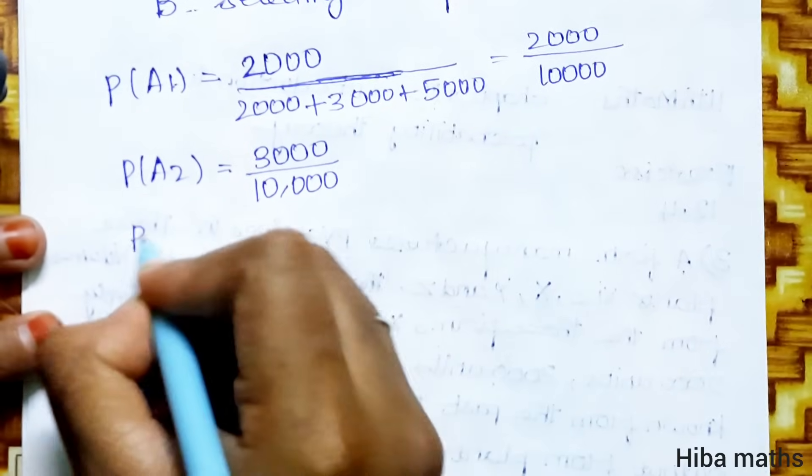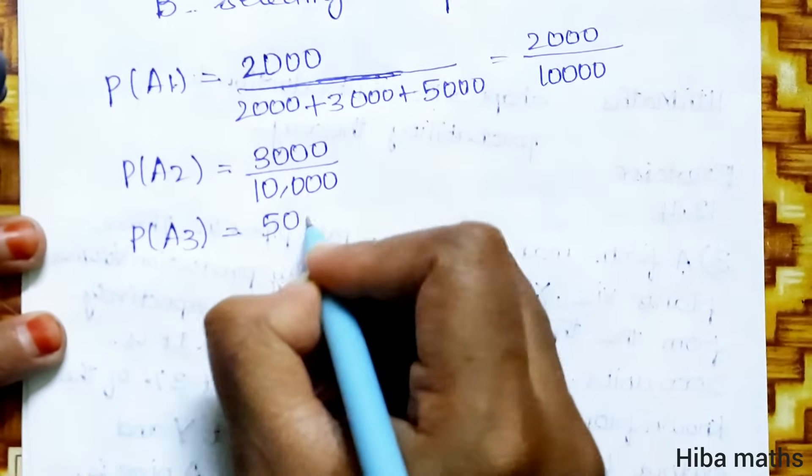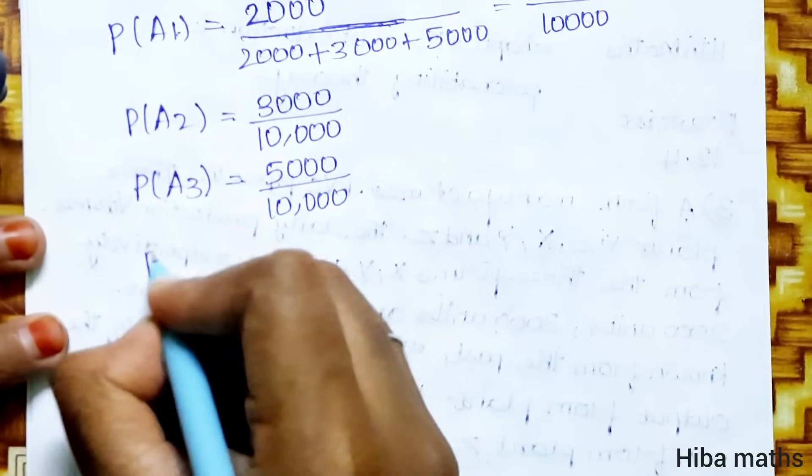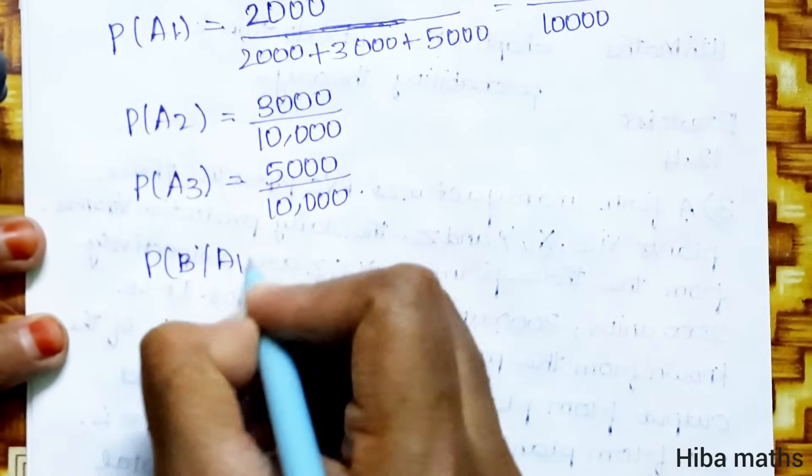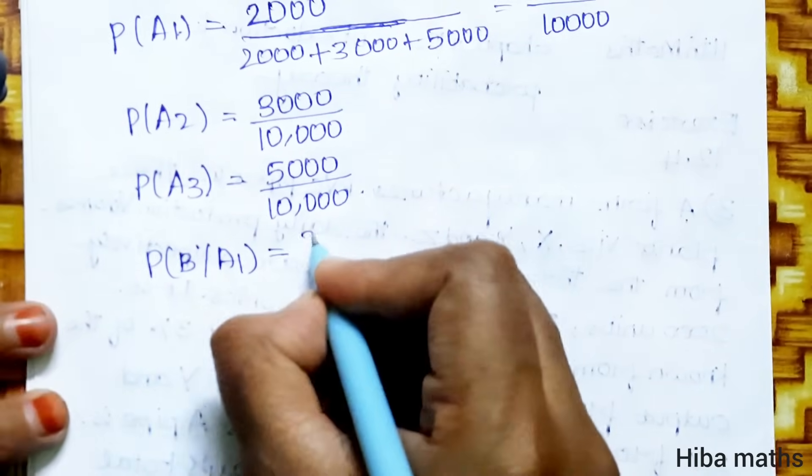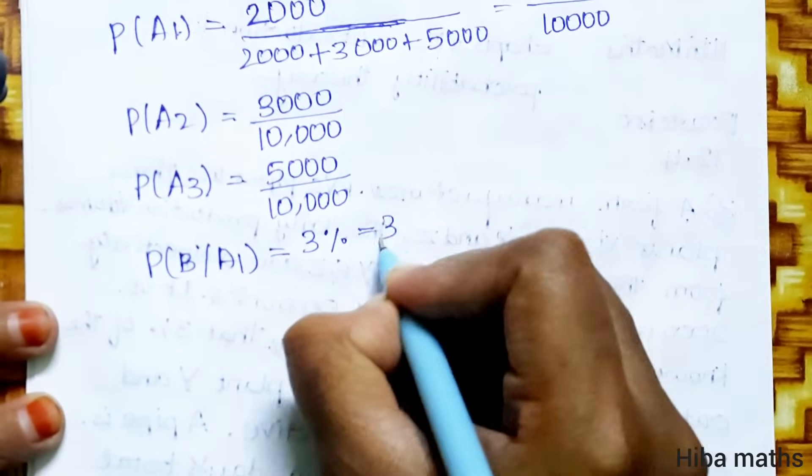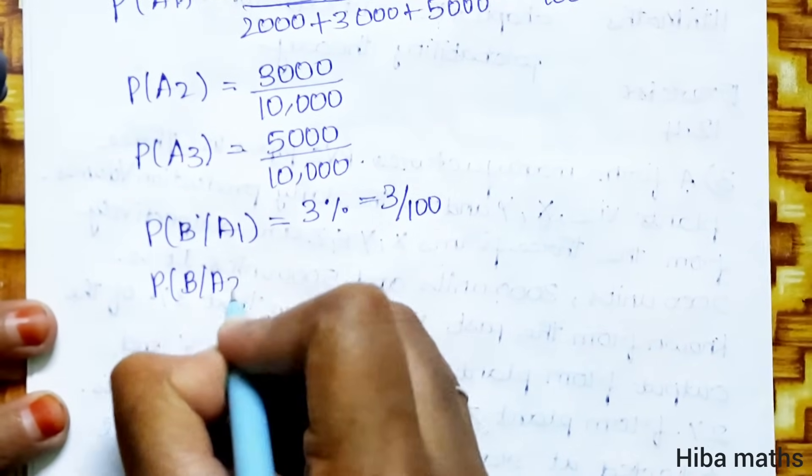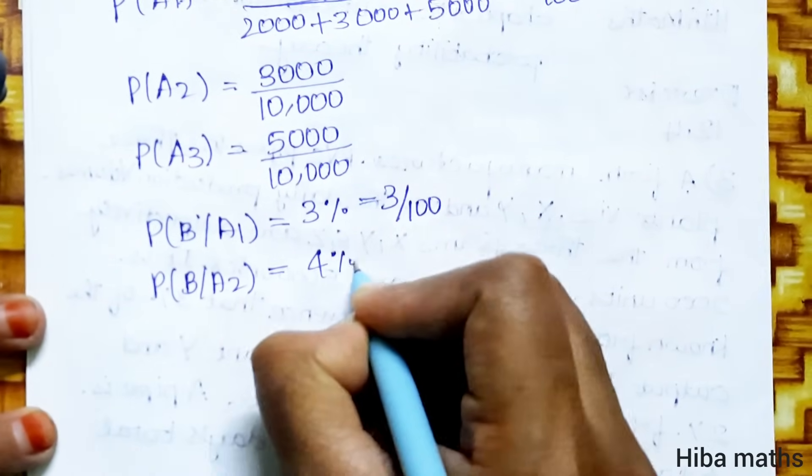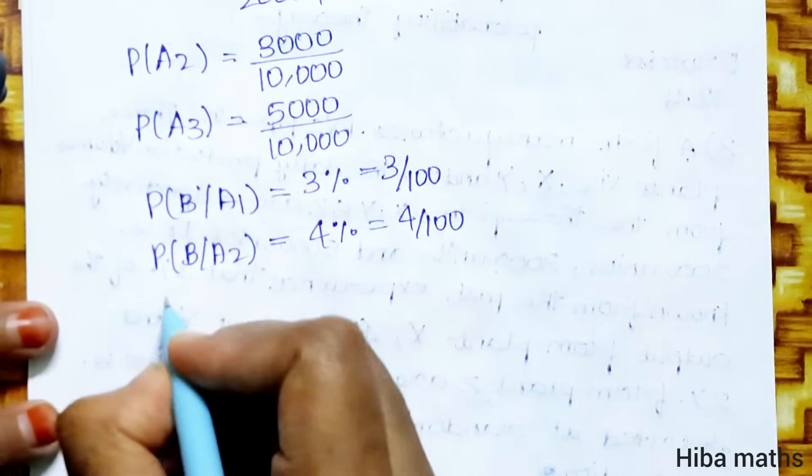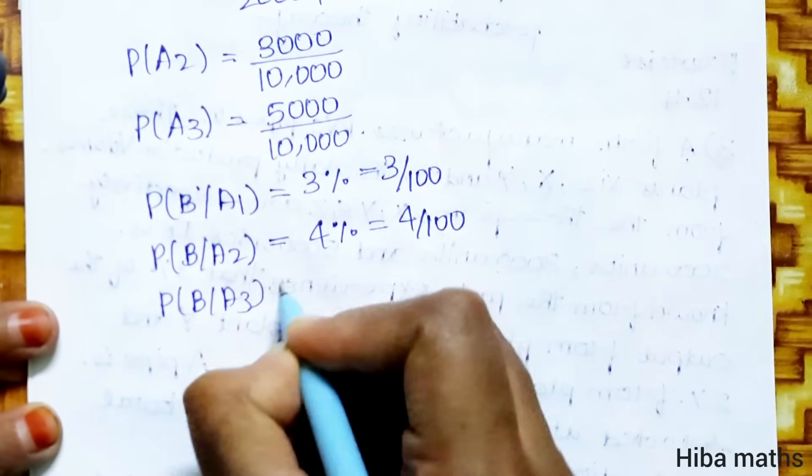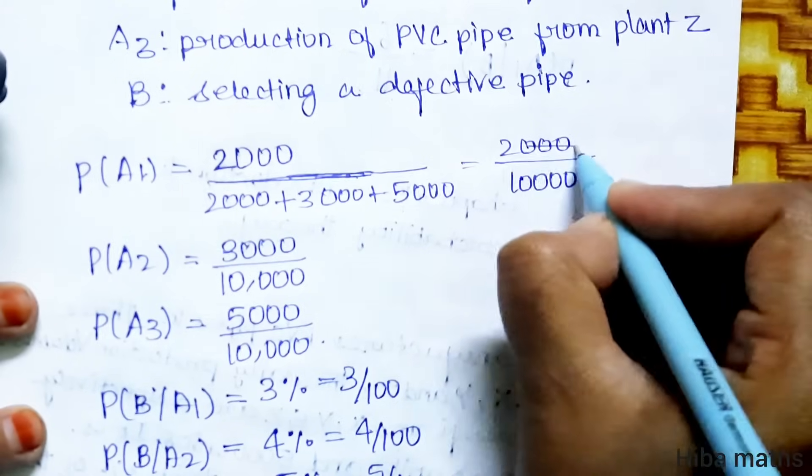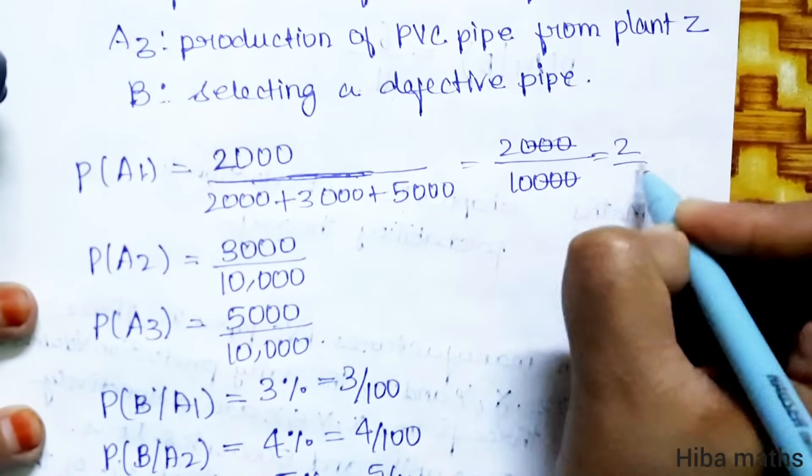P of A3, 5,000 by 10,000. P of B in A1, percentage is 3, 3 percentage is 3 by 100. P of B by A2, 4 percentage is 4 by 100. P of B by A3, 2 percentage is 2 by 100.